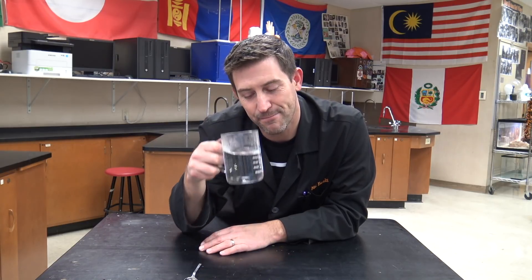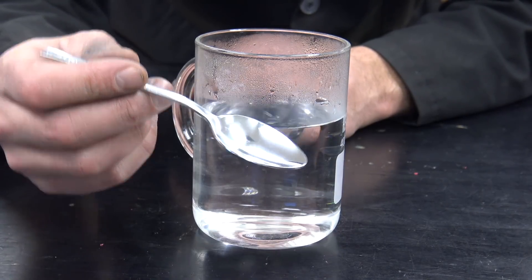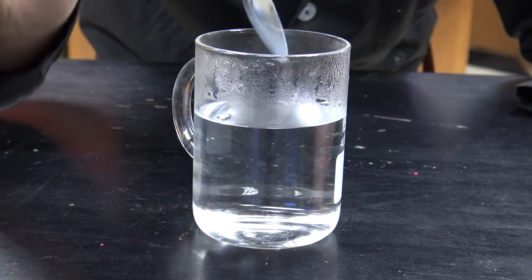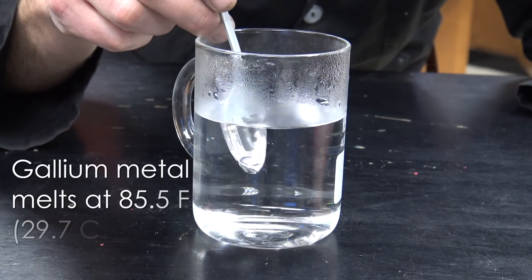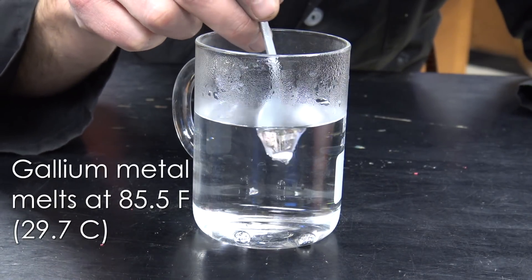So back in the day, this was the old parlor trick: to make a spoon out of gallium and they would give somebody a spoon with their tea to stir in their sugar and make their tea nice and tasty. And guess what would happen? Of course, the spoon would melt. Check this out.